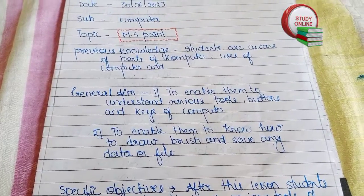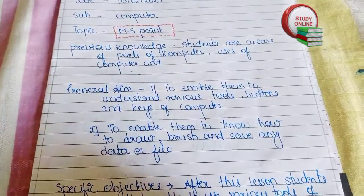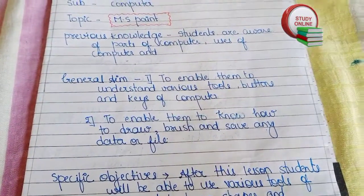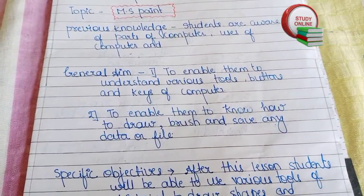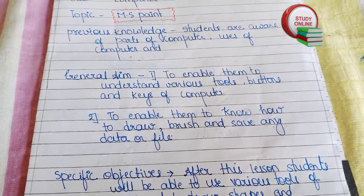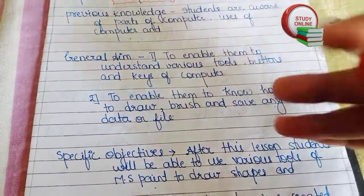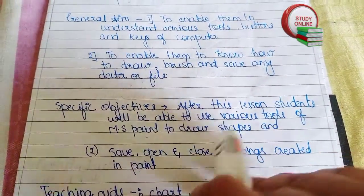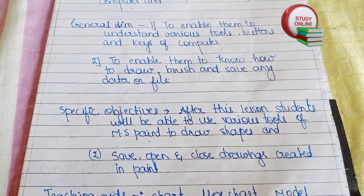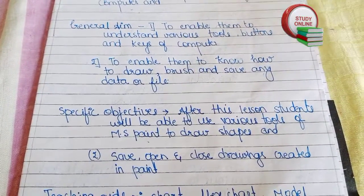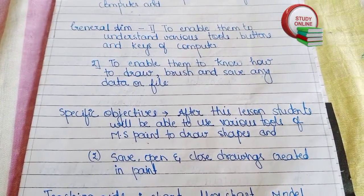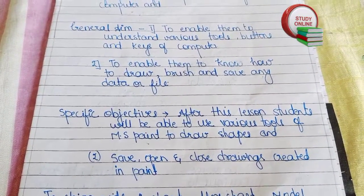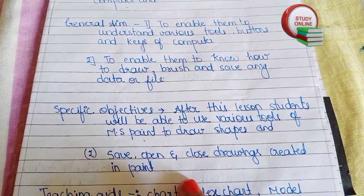We are going to tell students about all those buttons and keys, to enable them to know how to draw using a brush — meaning we will teach them how to draw on the computer, how to use brushes, and how to save data or files. For specific objectives, after this lesson students will be able to use various tools of MS Paint to draw shapes and do many other things, like saving files.